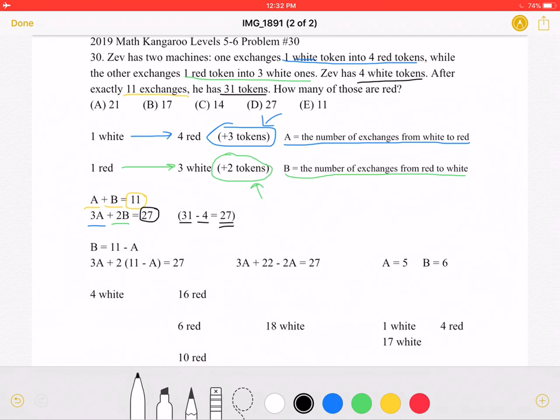Now we want to solve for A and B. Let's write B as being 11 minus A and then substituting B for 11 minus A. So we have 3A plus 2 times the quantity of 11 minus A is equal to 27. If we distribute the 2, we will get that 3A plus 22 minus 2A is equal to 27.